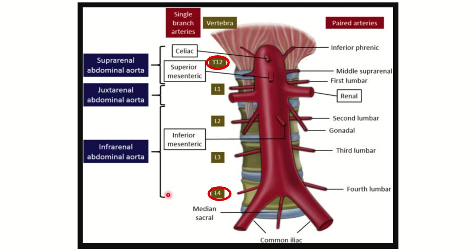Here we can see the abdominal aorta. The abdominal aorta enters the abdomen through the diaphragm at the level of the thoracic 12th vertebra. So the abdominal aorta starts at the level of the T12 vertebra.